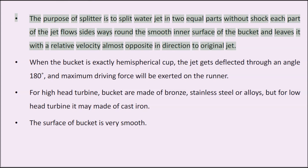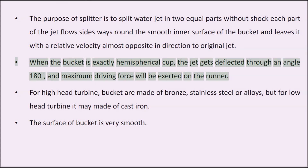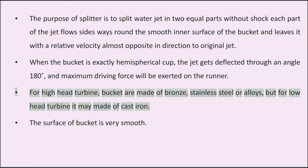When the bucket is exactly hemispherical, the jet gets deflected through an angle of 180 degrees and maximum driving force is exerted on the runner. For high-head turbines, buckets are made of bronze, stainless steel, or alloys, but for low-head turbines they may be made of cast iron. The surface of the bucket is very smooth.